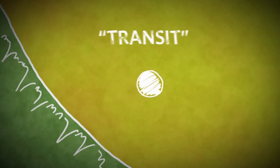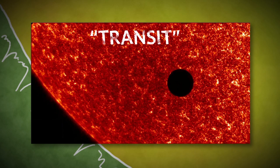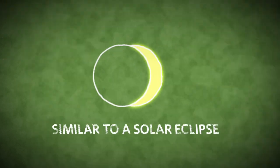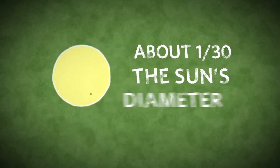This event is called a transit, during which the small round silhouette of Venus slowly crosses the disk of the Sun. It's kind of like a solar eclipse, except the image of Venus is very small, only about 1/30th the Sun's diameter.